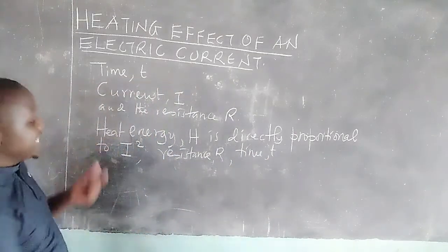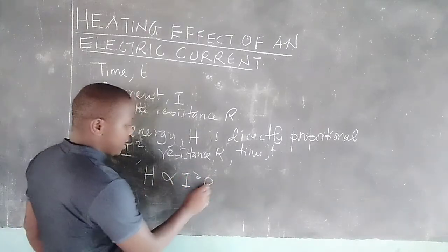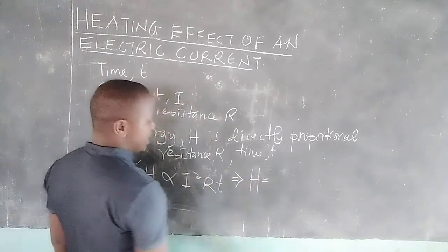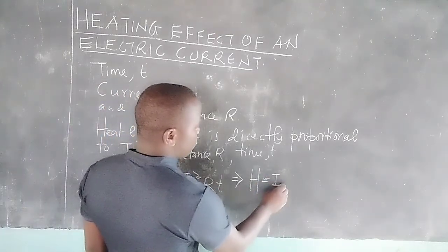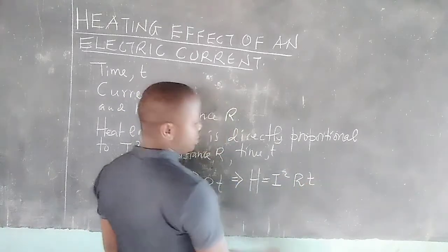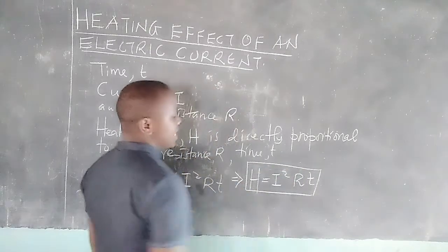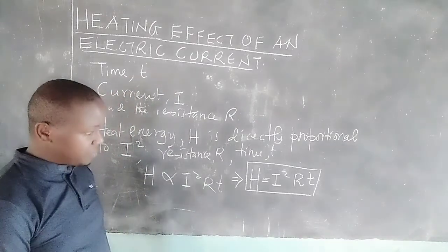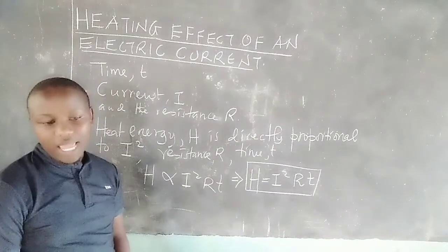Therefore, the heat energy produced is directly proportional to I², R, and time T. This implies that if we introduce a constant equal to 1, then heat produced equals current squared times R times T — the time during which the current has passed through a given conductor. So the heat produced is given by H = I²RT, according to James Joule.